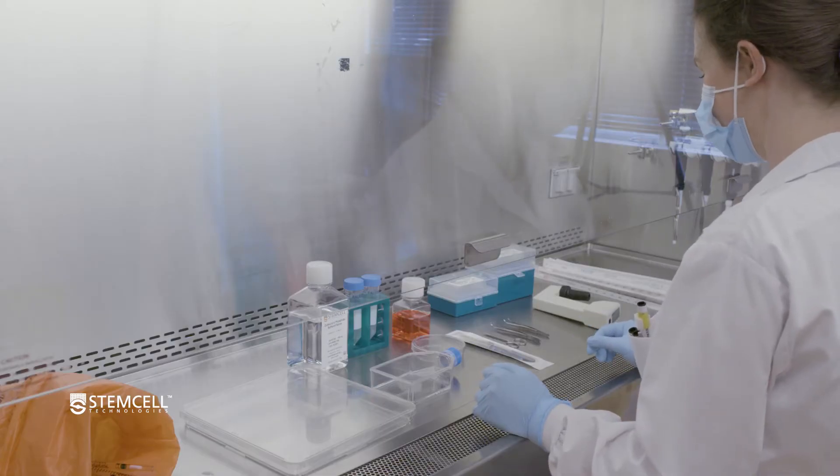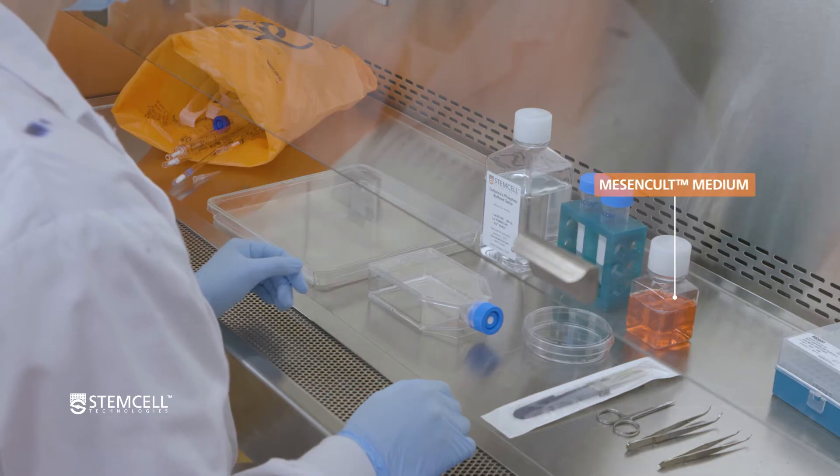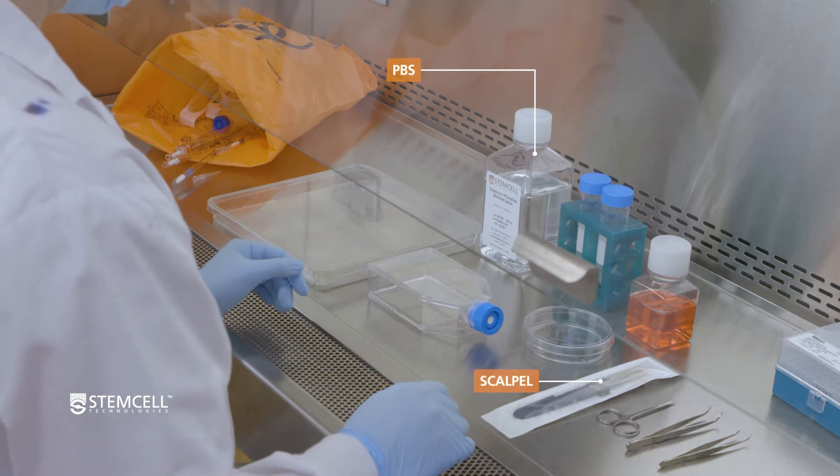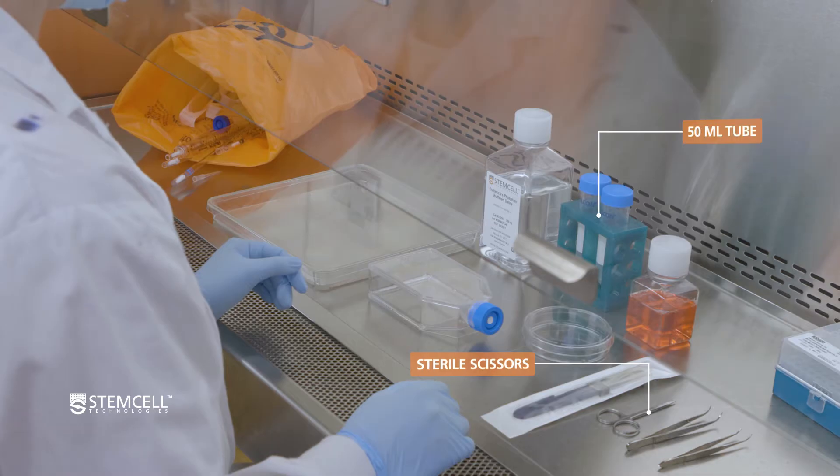Next, prepare the sterile dissection area. You will need culture wear pre-coated with ACF attachment substrate, complete MesenCult ACF Plus Umbilical Cord Medium, PBS, a sterile scalpel, 2 sterile forceps, a 10-centimeter sterile dissecting dish or larger, a tissue chopper or sterile scissors, and 50 ml falcon tubes.